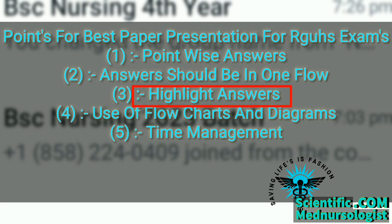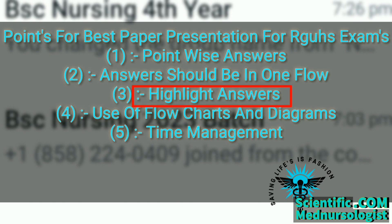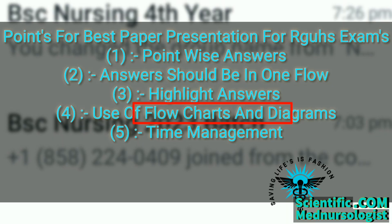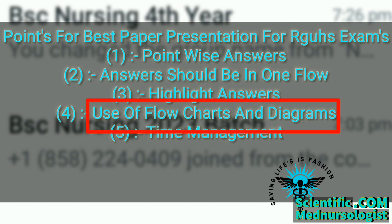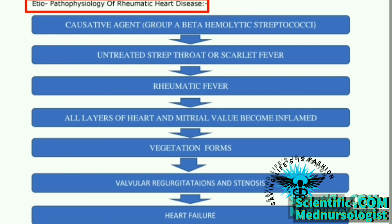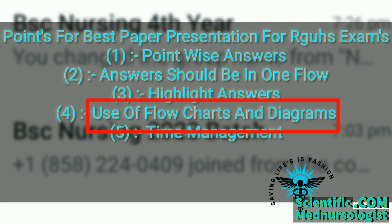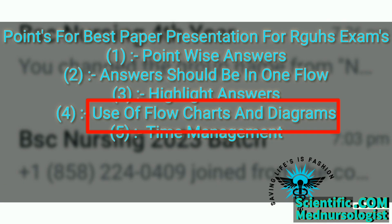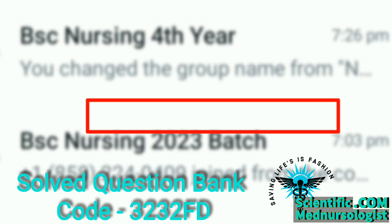Second point: highlight your answers. Try to write as few sentences as possible and explain your topic in fewer words, because stretching your answers makes it annoying for readers. Third point: use flowcharts. Your answer booklet should be filled with diagrams wherever necessary and mainly with lots of flowcharts in an easily understandable manner. Using flowcharts also saves time in your degree examination. Here I have brought a solved question paper to show you the best paper presentation — this is the pharmacology and pathology solved question paper discussed previously.